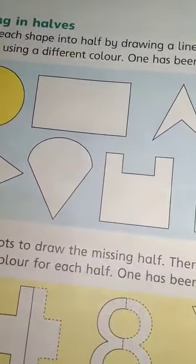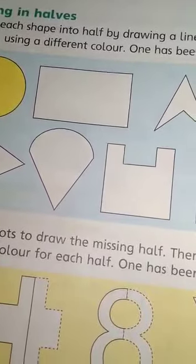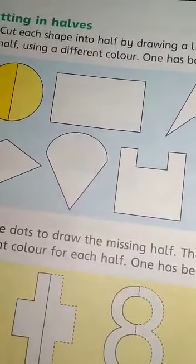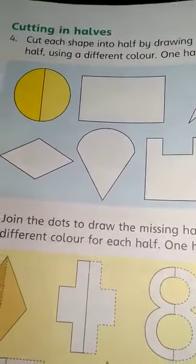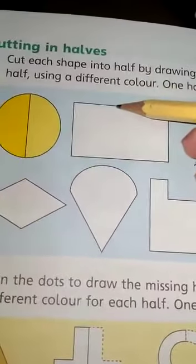Next, cutting in halves. Take a cut, each shape into a half by drawing a line, then color each half using a different color. One has been done for you. We have seen this from both sides.